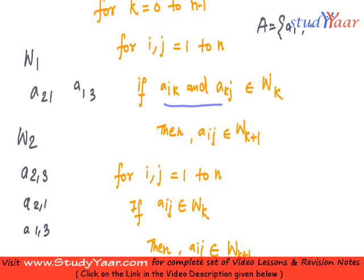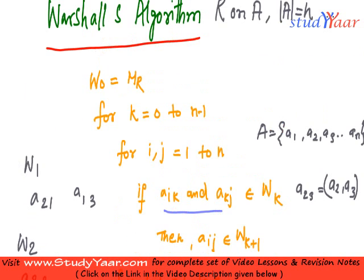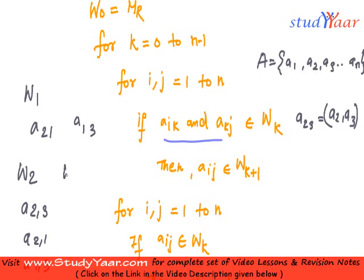Then a_2,3 is basically a2 comma a3. So that is how you proceed in Warshall's algorithm. A Wk+1 is created from Wk by checking out if both these elements are present, then we add this particular element, and the rest of the elements are copied as it is from the Wk.